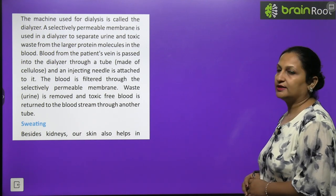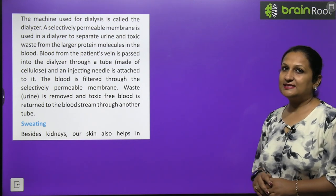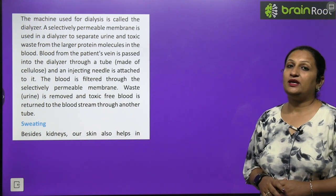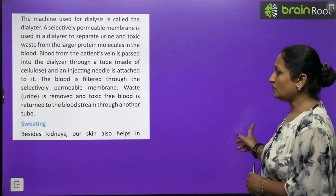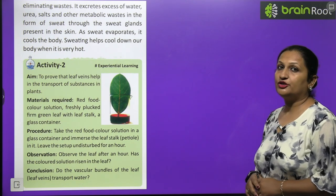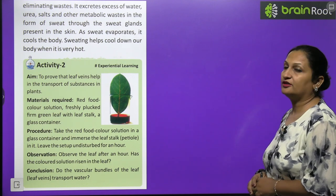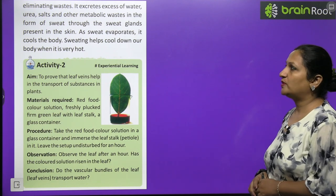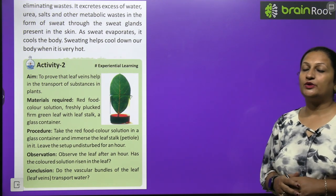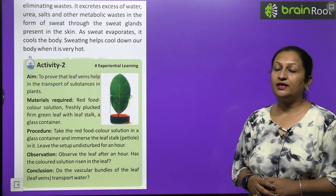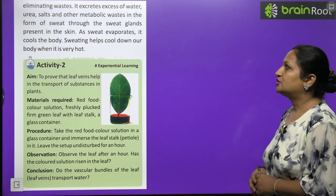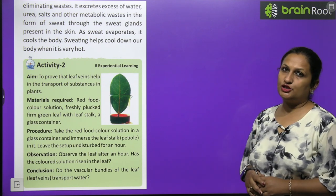Besides the kidneys, the skin is also an excretory organ. It excretes excess water, urea, salts, and other metabolic waste in the form of sweat through sweat glands. As sweat evaporates from your body, you experience a cooling sensation, which helps maintain and cool down body temperature. Sweating helps cool down our body when it is very hot.